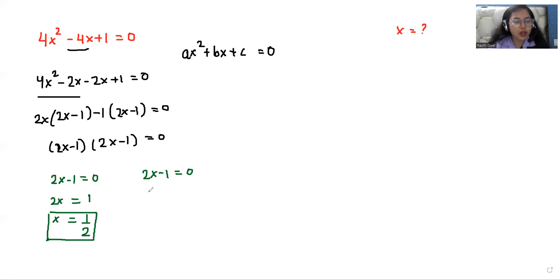So one value of x is 1/2. This is again the same root. The value of x from this is also 1/2. So we have two values of x: 1/2 and 1/2.